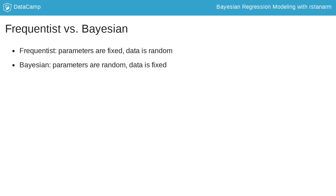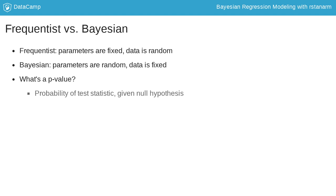This can be seen in the interpretation of a p-value. The p-value is the probability of observing data that gives rise to a test statistic that large. In other words, given a set of true parameter values — the null hypothesis — what's the probability of observing a random data set that results in a test statistic this large?